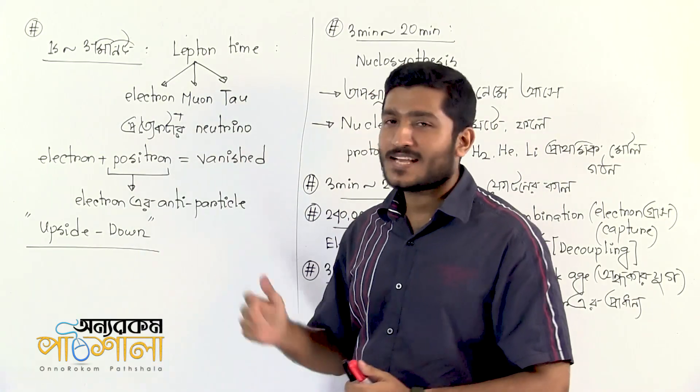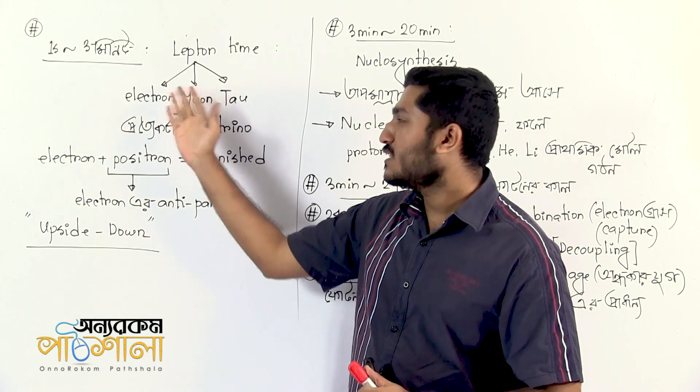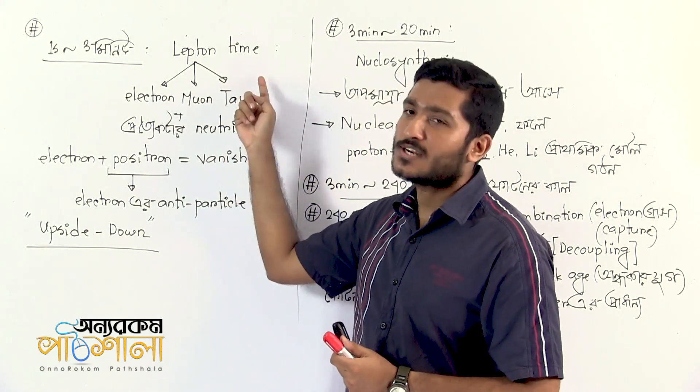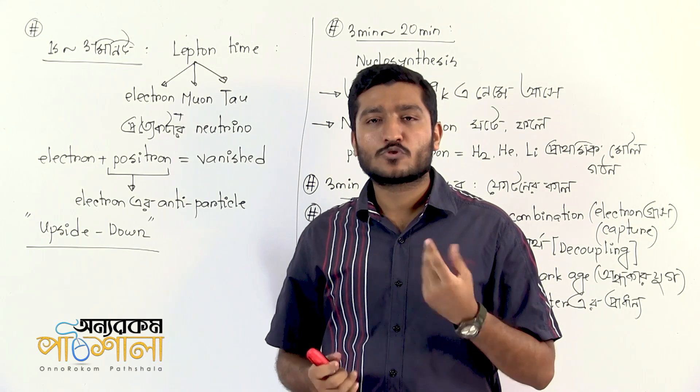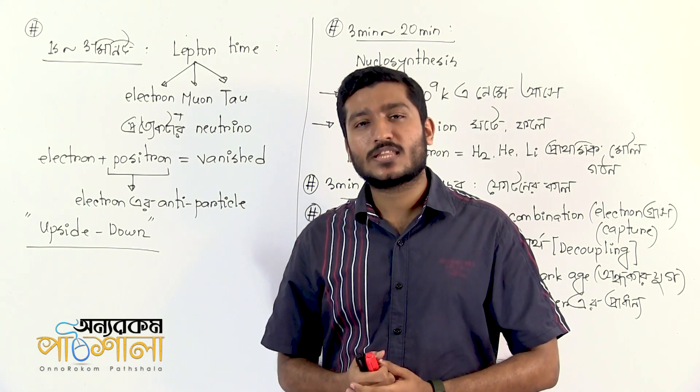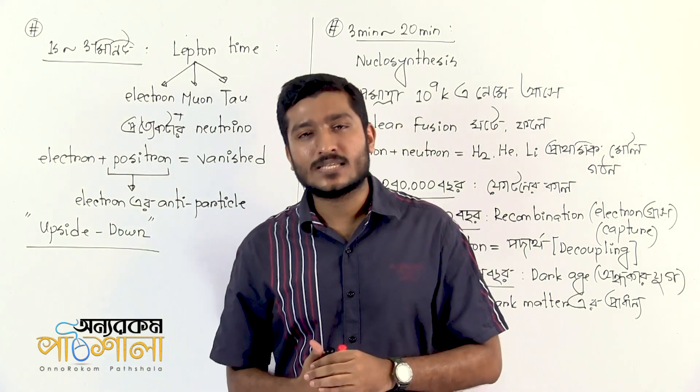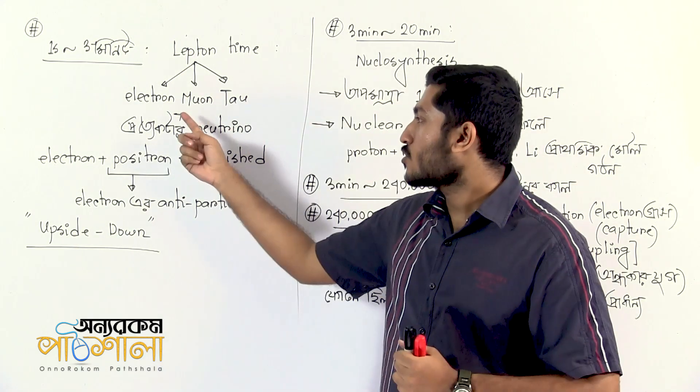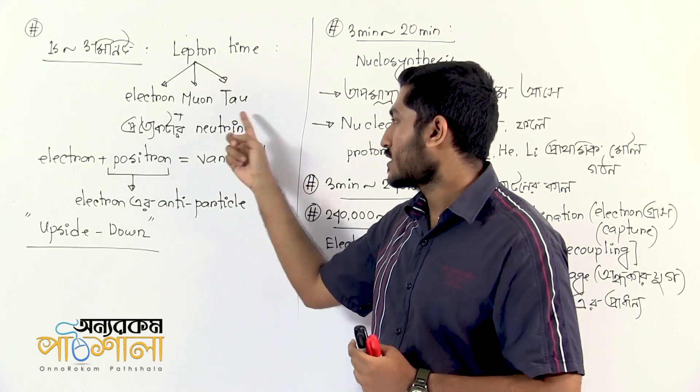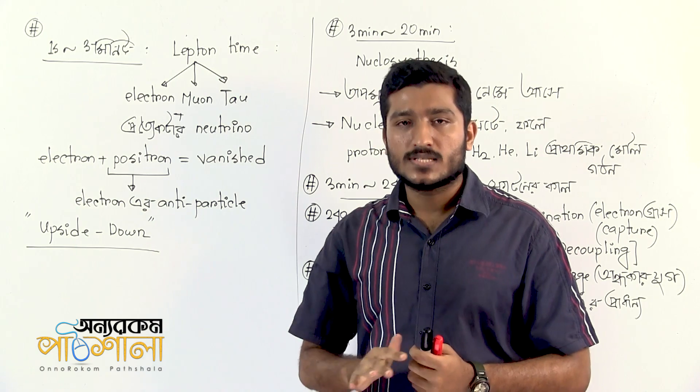From 1 second to about 3 minutes after the Big Bang, we have the lepton era. In the standard model of particle physics, there are six types of leptons: the electron, muon, and tau, along with their corresponding neutrinos - electron neutrino, muon neutrino, and tau neutrino.